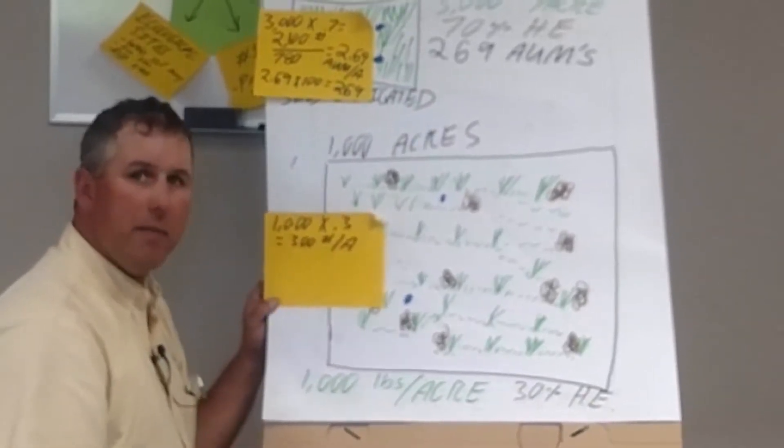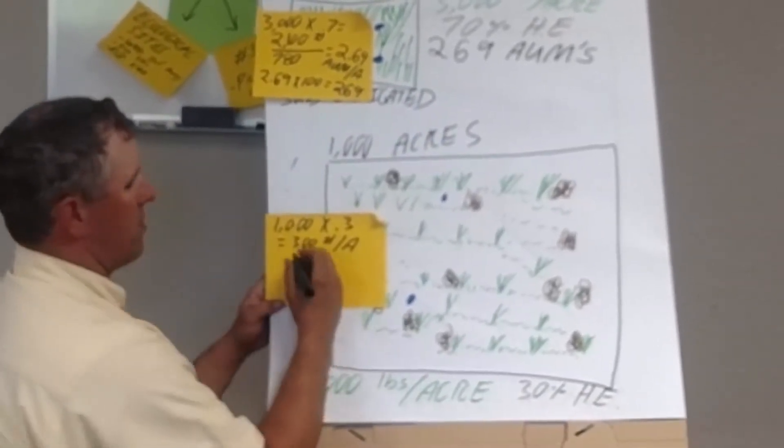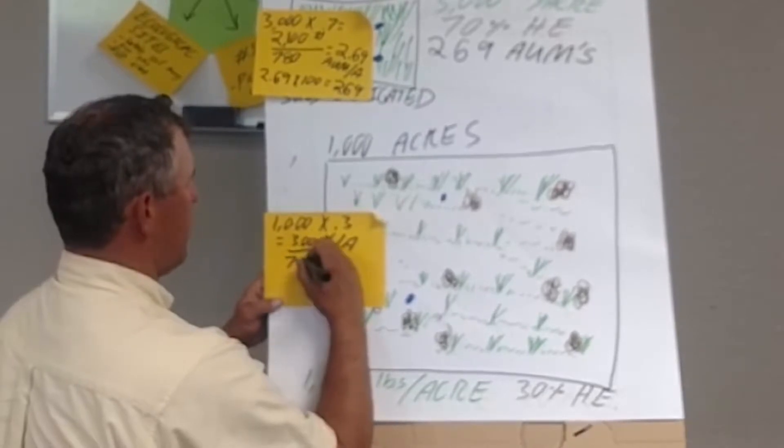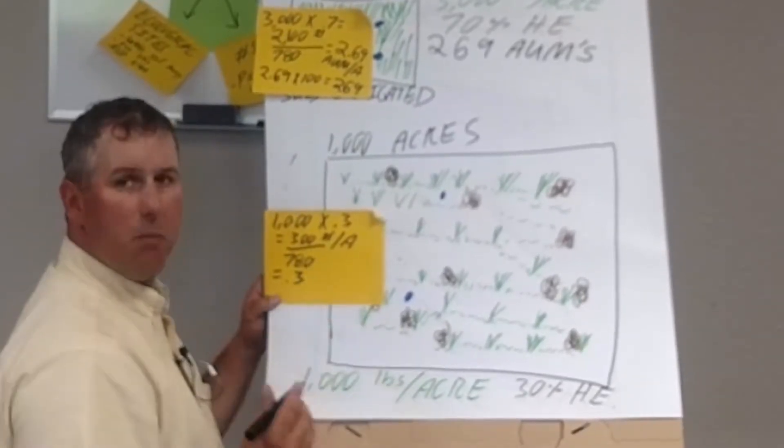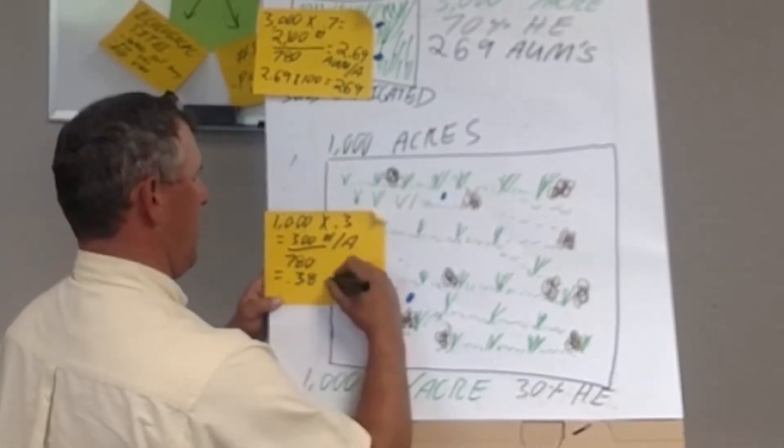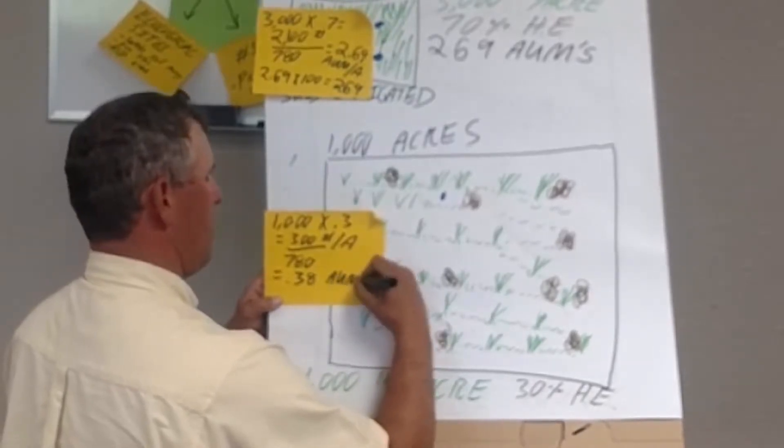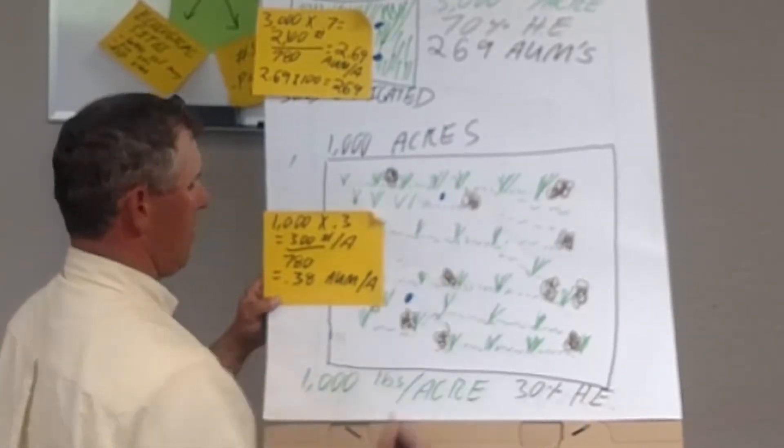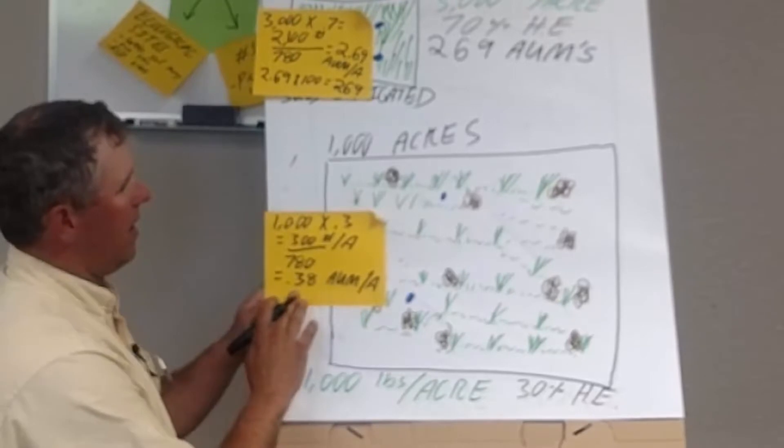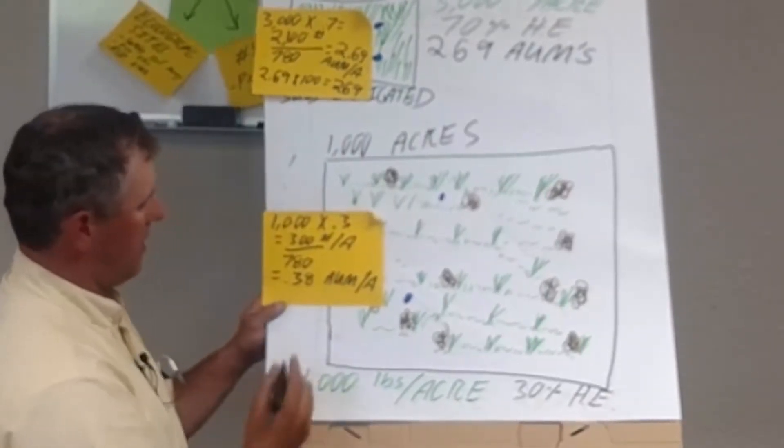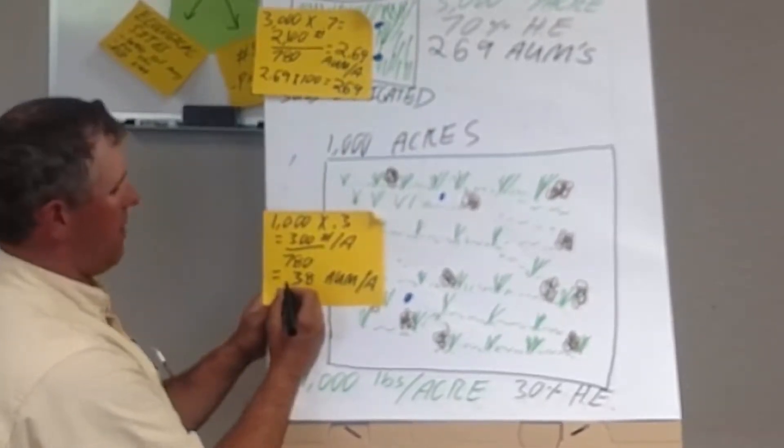An AUM is 780 pounds, so 300 divided by 780 gives me .38 AUMs per acre. I've got 1,000 acres of it.